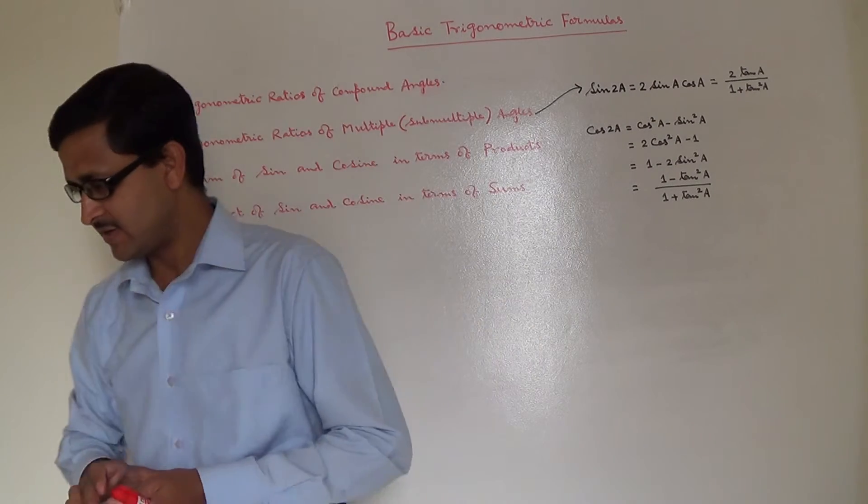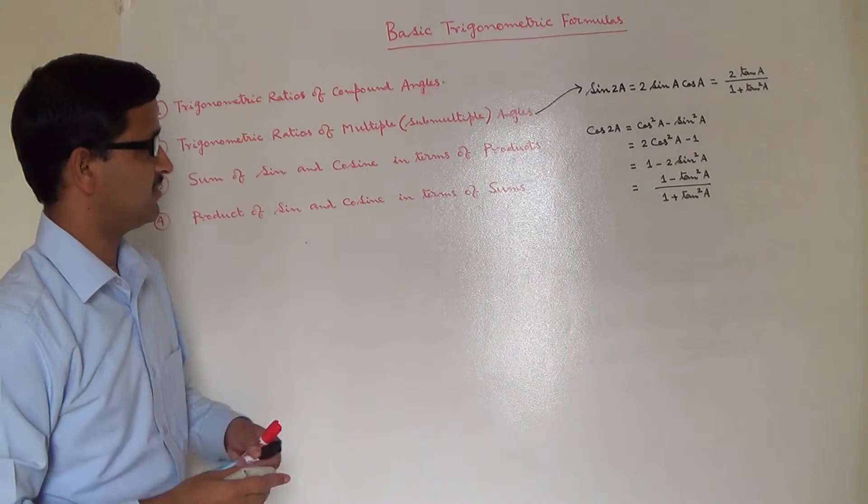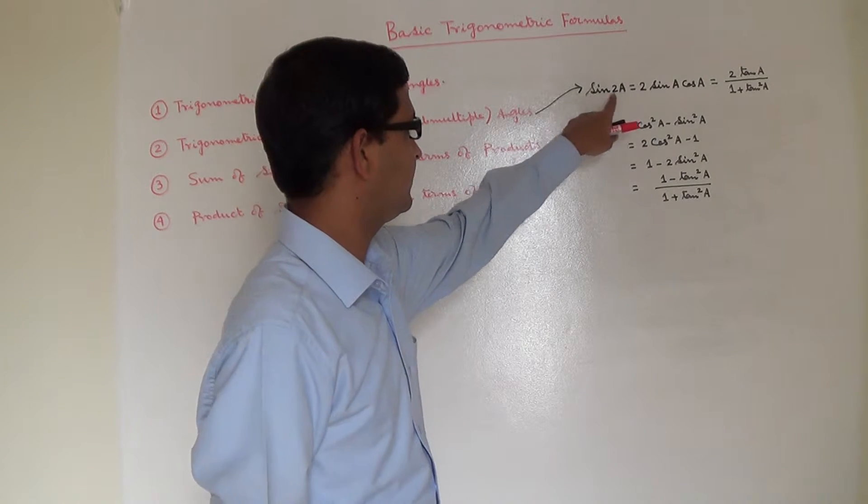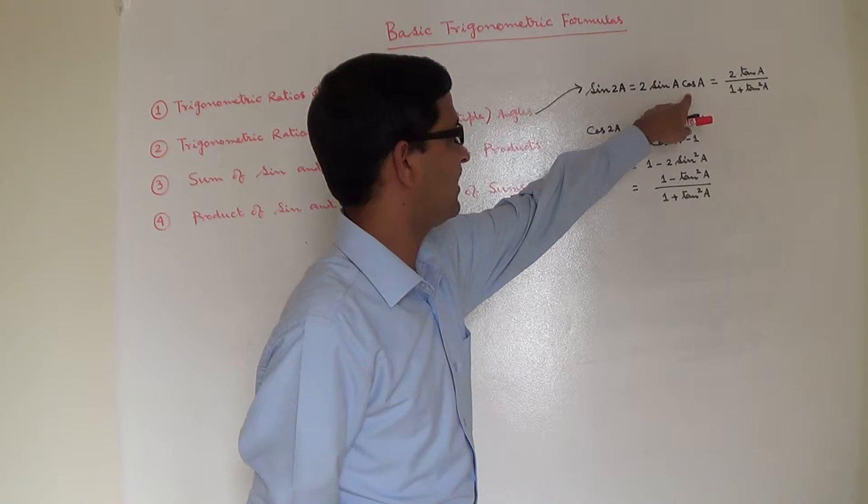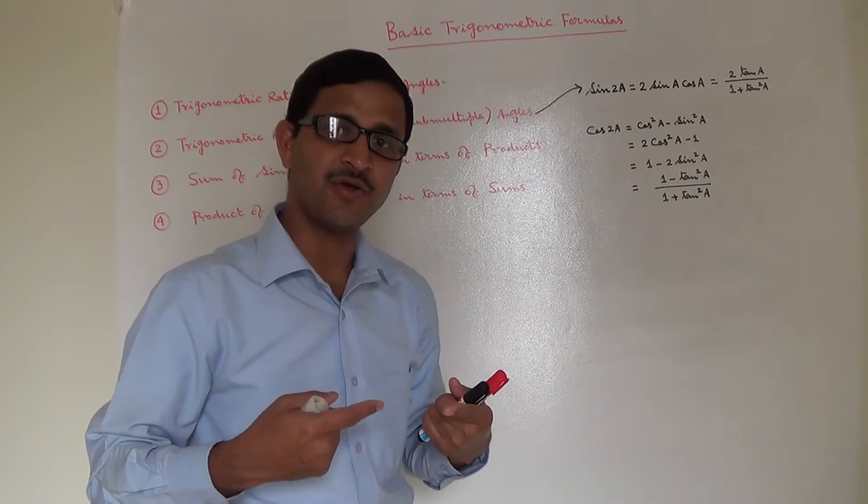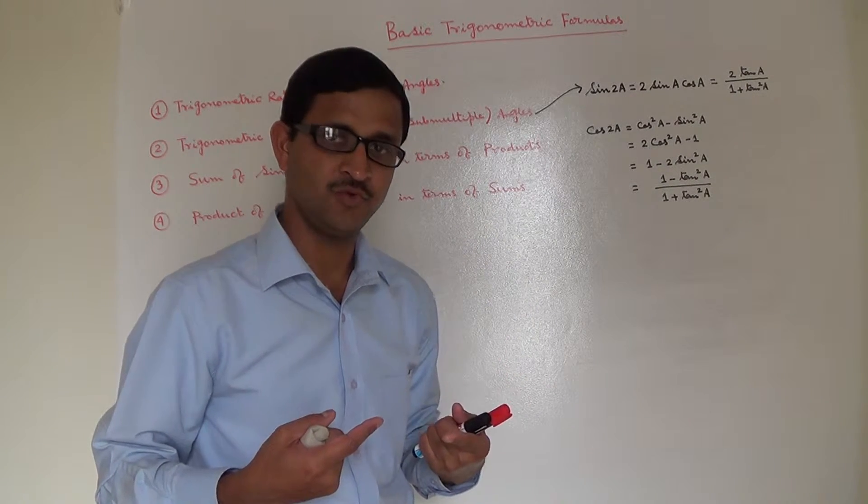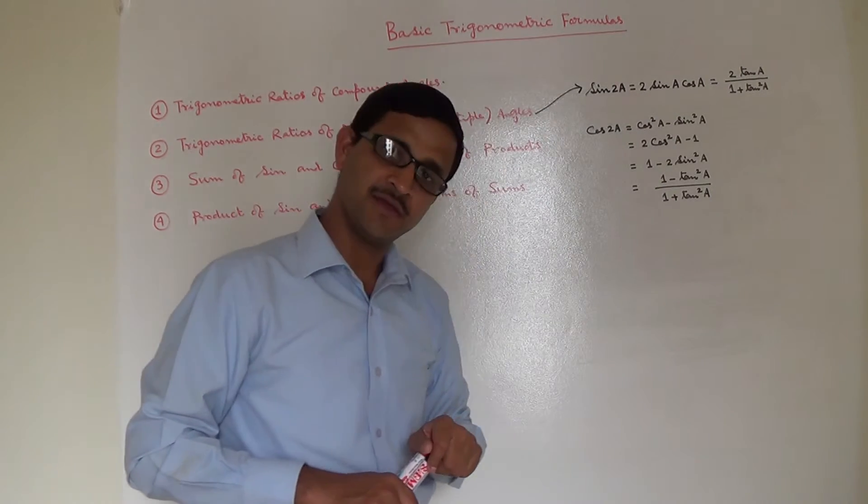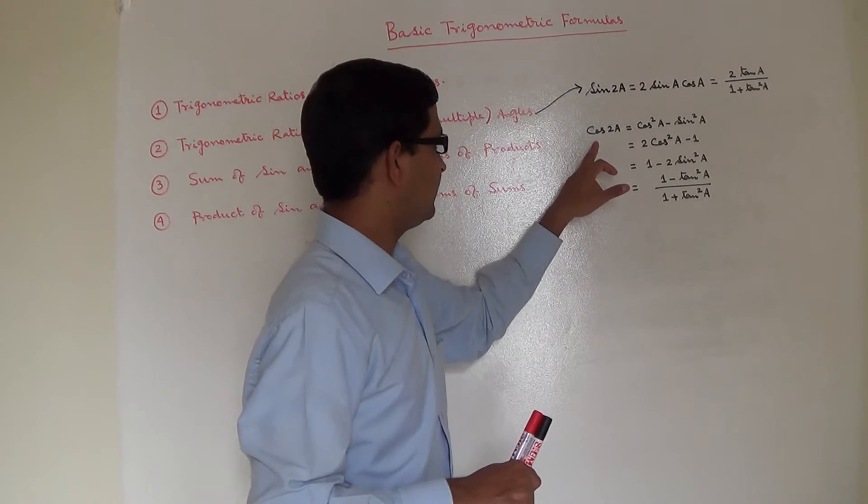Have a quick look into this. For sin 2A, we have 2 sin A cos A and also 2 tan A by 1 plus tan square A. So depending on the problem you are going to solve, you need to decide which formula to actually use.